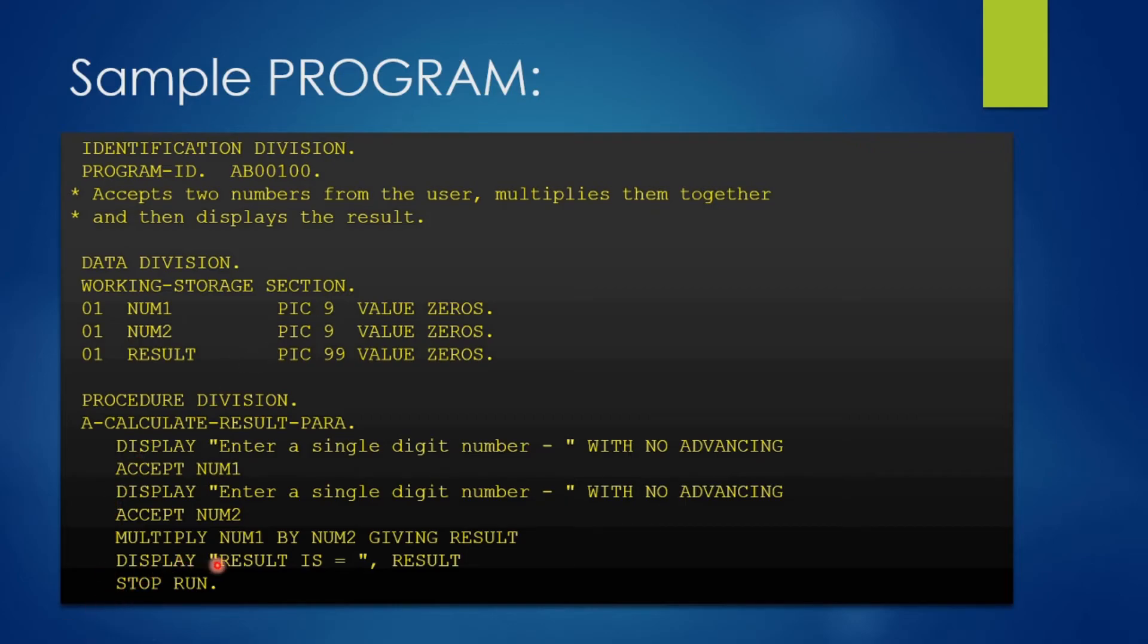And now we are displaying the result using the literal result is equal to and then we are using variable result. So in the output, the message result is and the value of the result variable will appear.